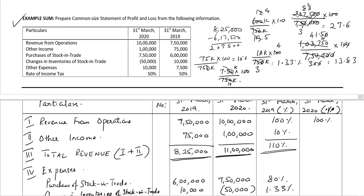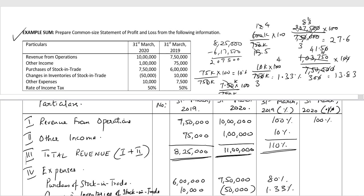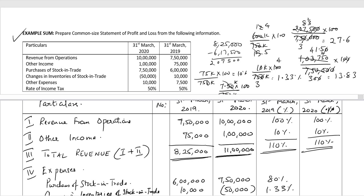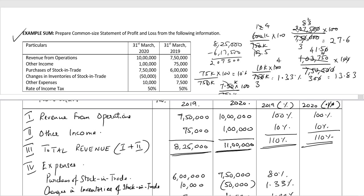Moving to 31st March 2020: other income is ₹1,00,000 divided by ₹10,00,000 multiplied by 100 equals 10%. The total revenue percentage is 110%.